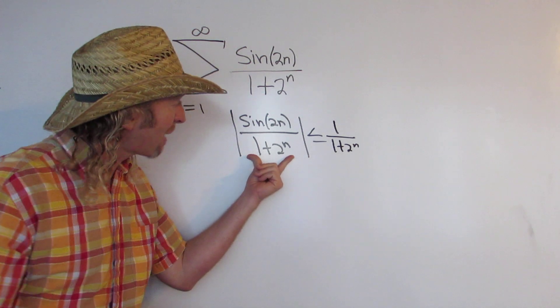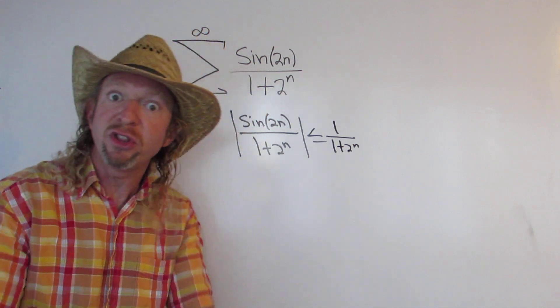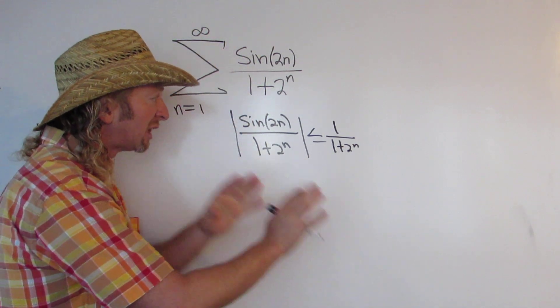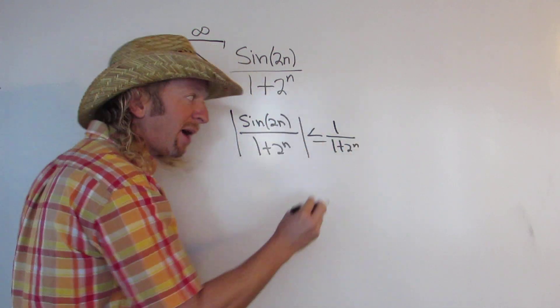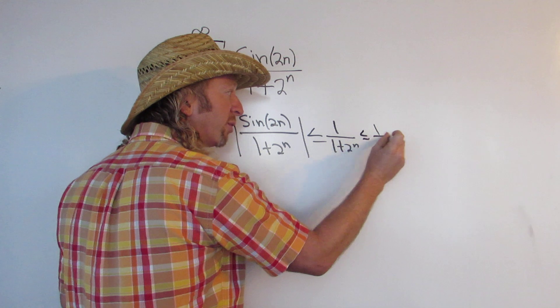And you can drop the absolute value on the bottom because 1 plus 2 to the n is always positive. So life is good. Now you can drop the 1 on the bottom. This is less than or equal to 1 over 2 to the n.